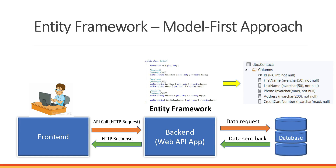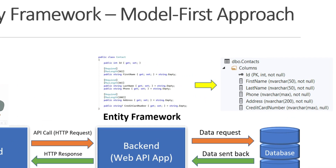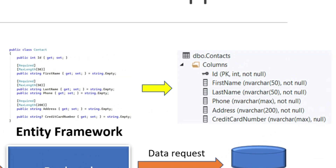We're going to be using the model-first approach. Entity Framework will create a table in the database that represents our class from our project. In this example we have a Contact class with properties ID, first name, last name, phone, address, and credit card number. Entity Framework will run a special tool and create a table in the database with columns using the same names.